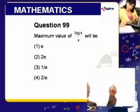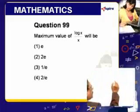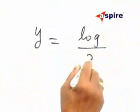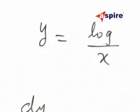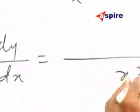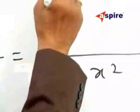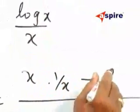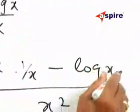We are asked to find the maximum value of log x by x. Let y equal log x by x. Differentiating, dy/dx equals, over x squared, x into 1 by x minus log x into 1.